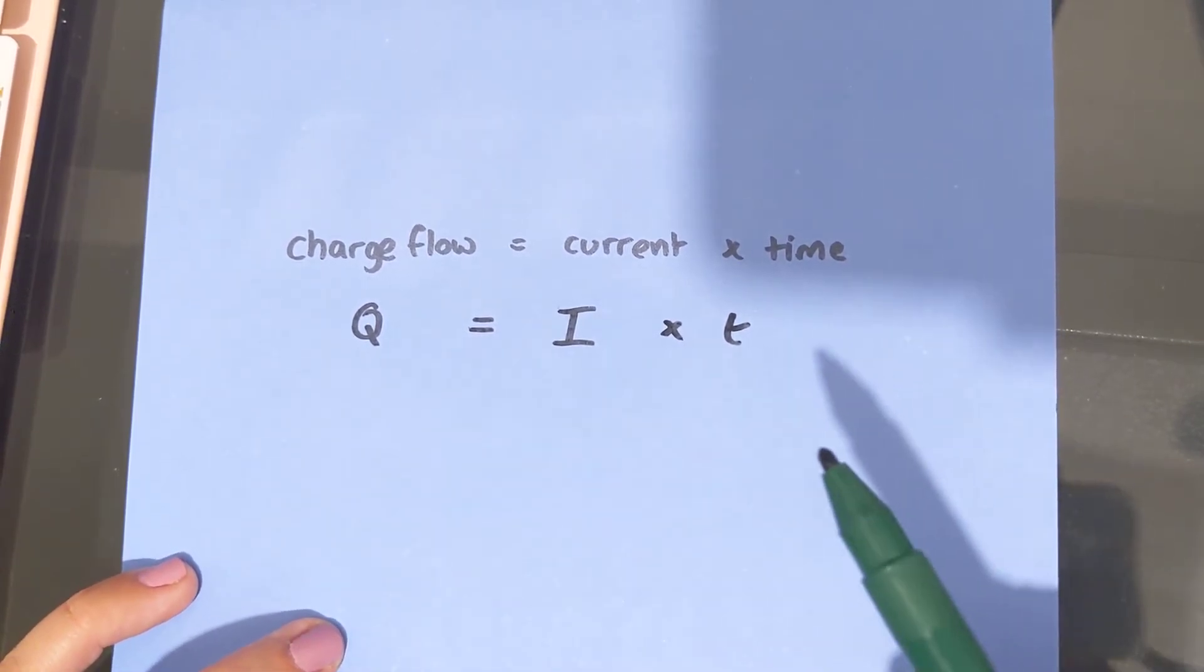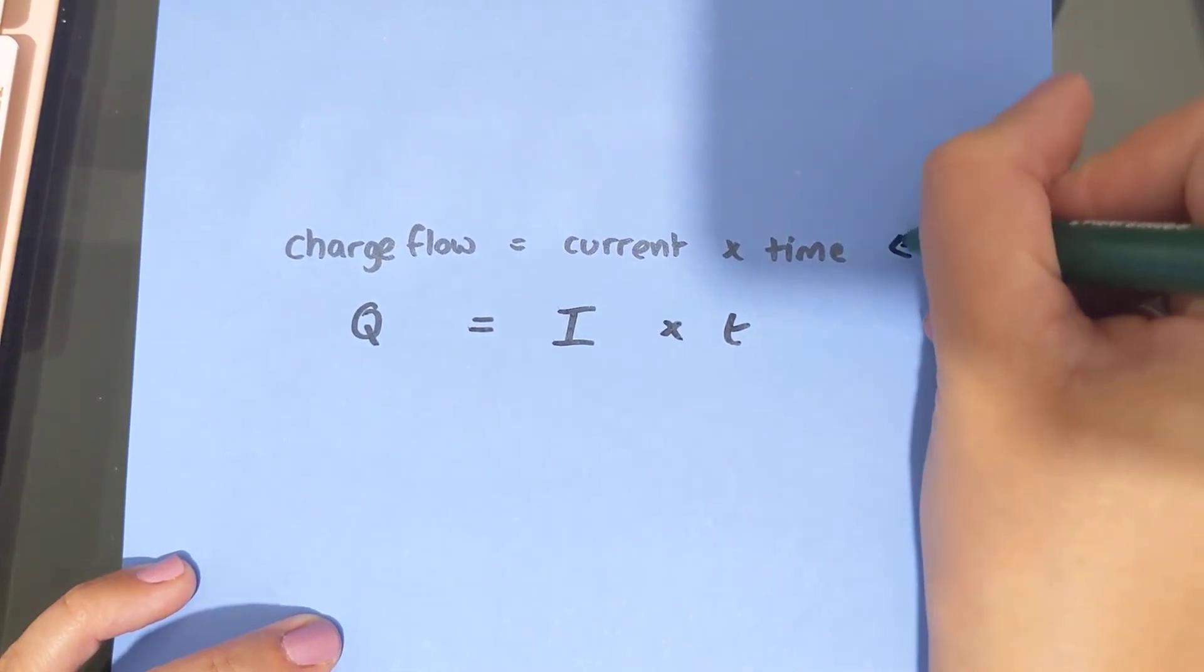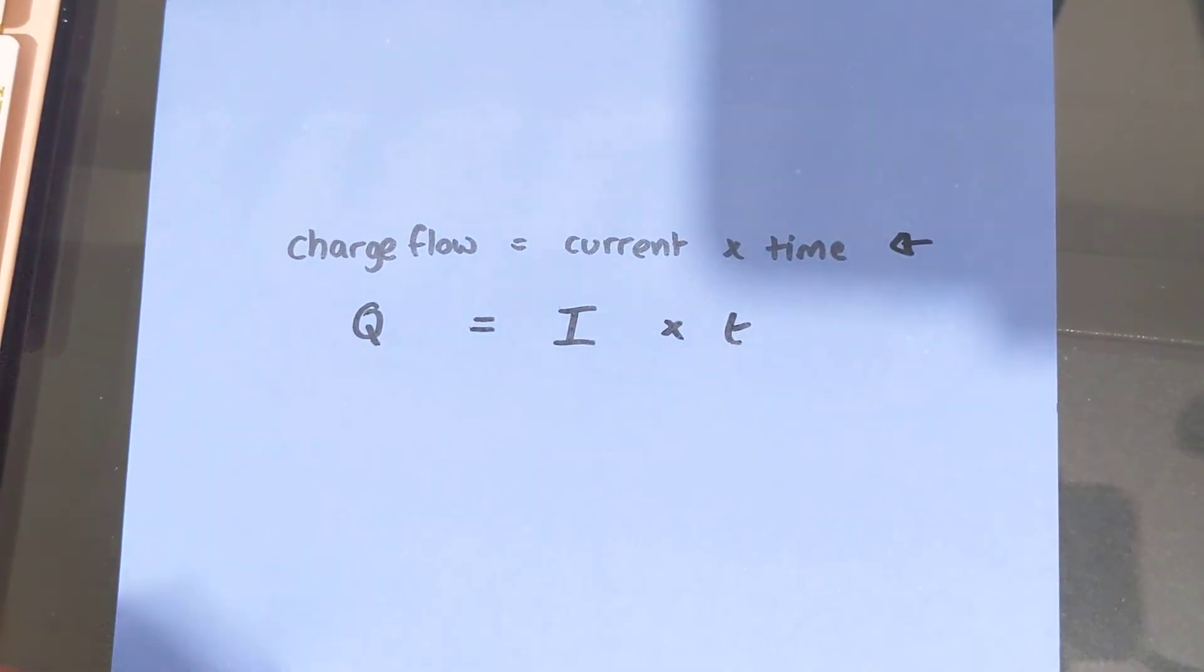Remember, if you're asked to write an equation down in your exam, I would always recommend writing the words out, because if you get the symbols wrong, you get no marks. So you can't make up your own symbols.